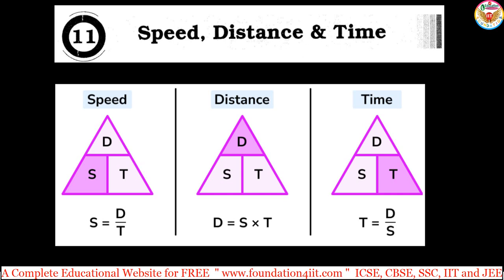Welcome to our educational channel. From Class 5, Chapter 11 is Speed, Distance and Time. In this chapter, we cover the relationship between speed, distance, and time, and how to solve problems based on that — for example, when distance and time are given to find speed, or speed and distance are given to find time, as well as conversions of speeds. I am also providing a link in the description for worksheets and a PDF file.